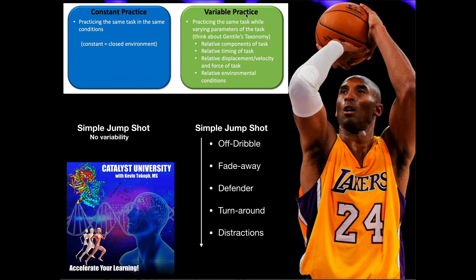That's why we eventually progress to variable practice. All variable practice is is taking the same skill — say the jump shot — and varying the parameters of the task. You can change the location, since you never know where you're going to be taking a jump shot in a game. You can change the distance from the goal, do it off a dribble, do a fadeaway, do it while someone's defending you, or do a turnaround jump shot.